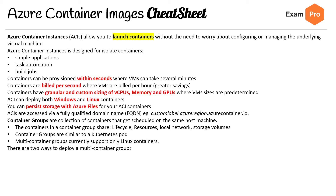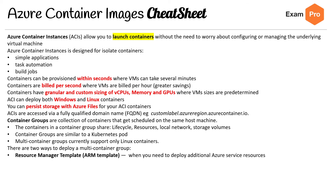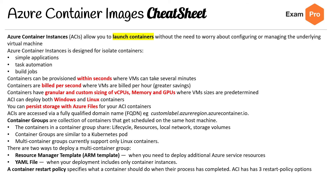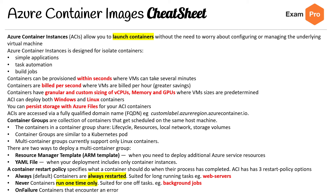There are two ways to deploy multi-container groups: via an ARM template or a YAML file. A container restart policy specifies what a container should do when its process has been completed. ACI has three restart policies: Always, Never, and On Failure.